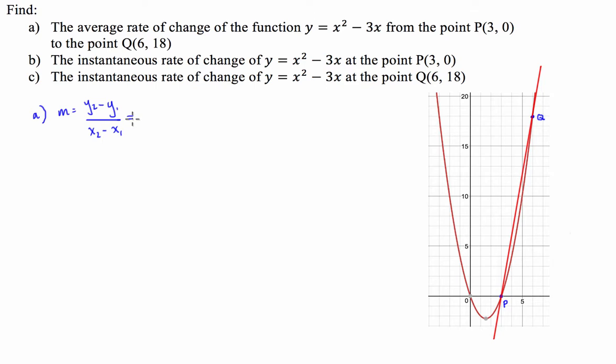So in the case that we're looking at here, we've got y2, which is 18, take y1, which is 0, divided by x2, 6, take x1, which is 3. And this is going to be equal to 18 divided by 3, which is equal to 6. So our gradient, or the average rate of change of the line that connects the points P and Q, is 6. So that is our solution to part A.